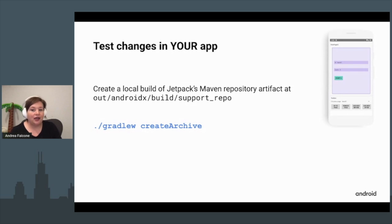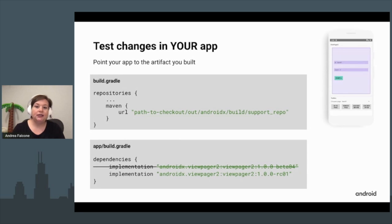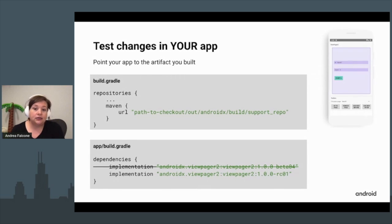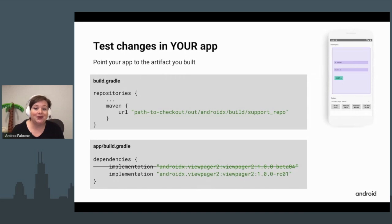To test changes in your own app, run `createArchives` to create a Maven repo of all the artifacts. Then modify your app to point to that Maven repo, which lives under `androidx/build/repo/support`. Change your `build.gradle` dependencies to depend on the latest version of the library that was built. So: build it, create the archive, point your app to it, and test it.